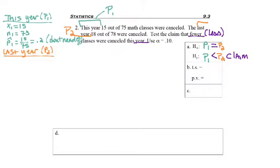Last year, which was our second population, there were 18 out of 78 classes canceled. So 18 is our X2, 78 is our N2, and P-hat 2 is to divide those numbers. In this case, the number keeps going, so remember we're going to use 5 digits after the decimal, rounding on that 5th digit.